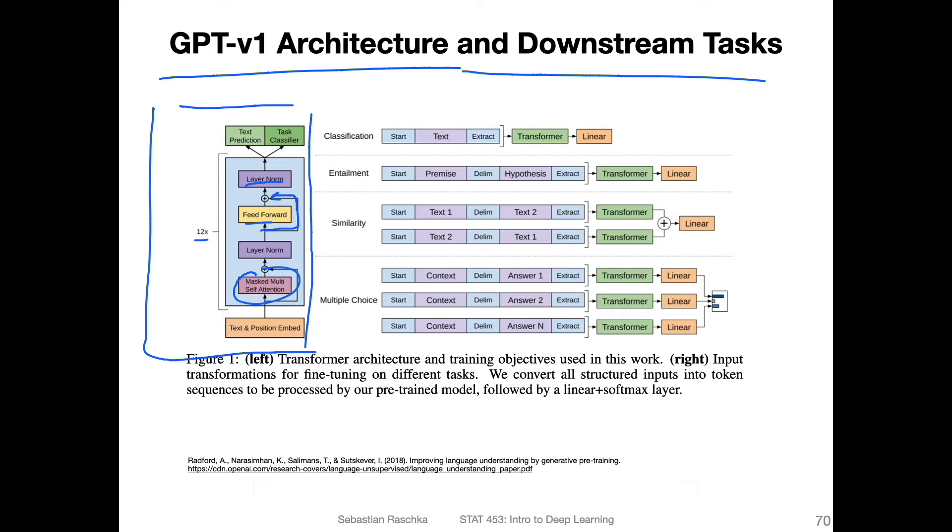Another thing here is that you can see there are two boxes as the output. One is called text prediction, and one is the task classifier. First, there is pre-training happening with the next word prediction. And then after the pre-training, you have the fine-tuning on the different downstream tasks, one task you're interested in. This box, I think, should symbolize the pre-training task, which is the next word prediction. They call it text prediction.